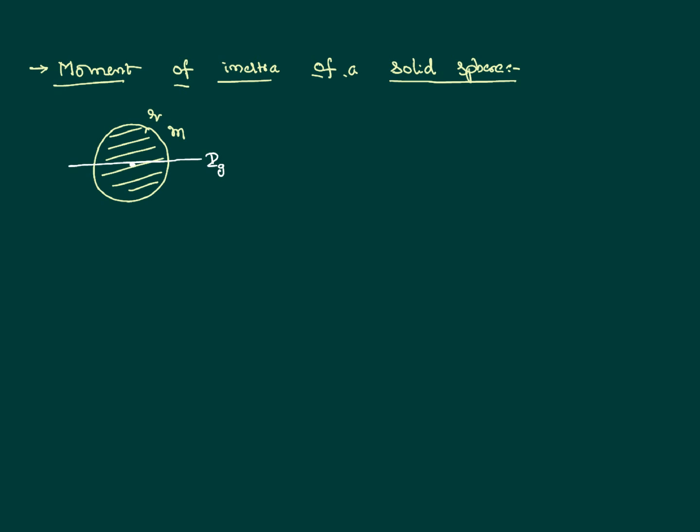This is also called an axis passing through the center of gravity. This value has to be calculated using integration, and it can be proved that its value is equal to 2/5 MR².